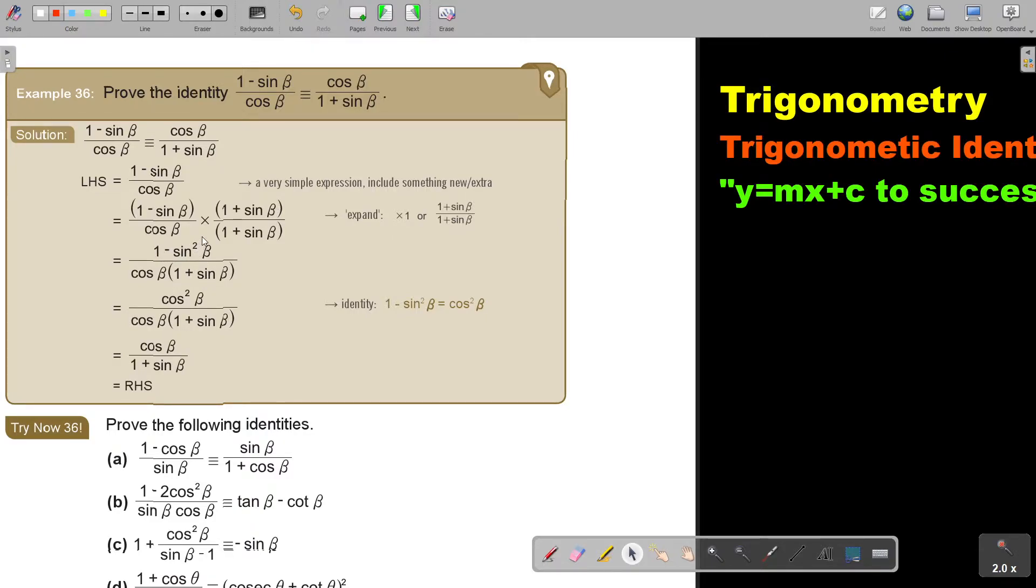Now I can replace this. Because in place of this, I can put 1 minus sin squared equals cos squared beta. I put it in. And then one of the cos can cancel out. And I'm left with the right-hand side.